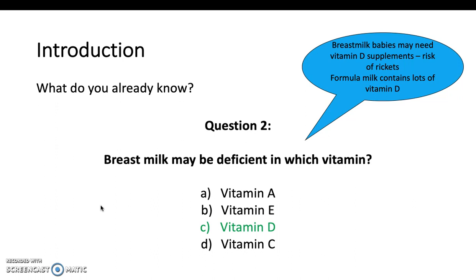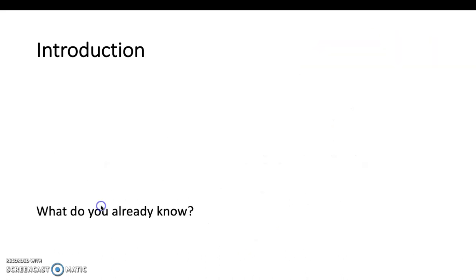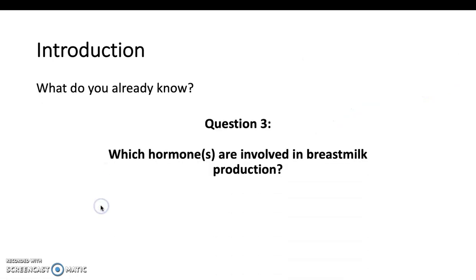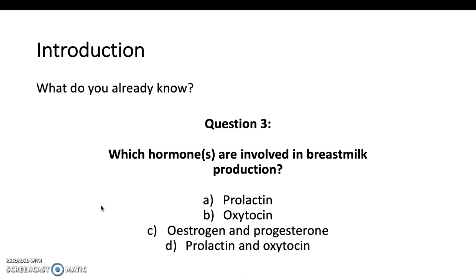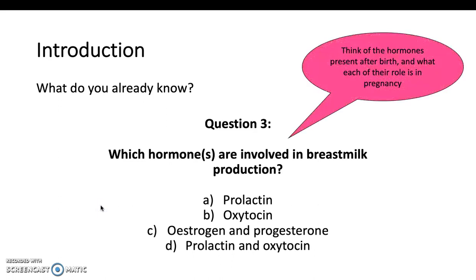As a side note, vitamin A is abundant in colostrum, which I'll explain a bit more about later. Next, think about the hormones present after birth and what each of their roles is in pregnancy and how they may be related to breast milk production.